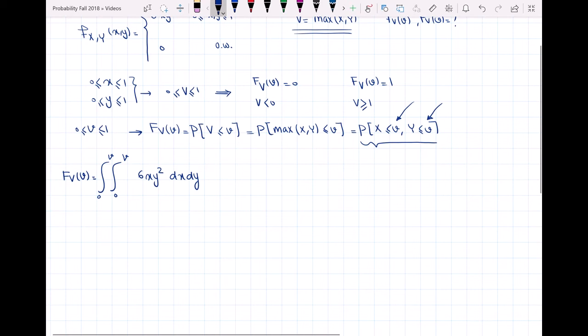Separating the integrals, this gives me the integral from 0 to v of 2x dx times the integral from 0 to v of 3y squared dy. This gives v squared times v cubed, which equals v to the fifth. So this is the CDF of V when V is between 0 and 1.